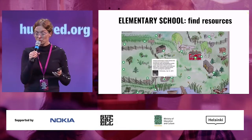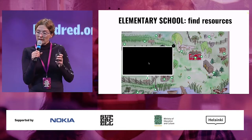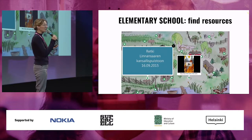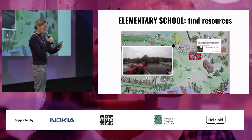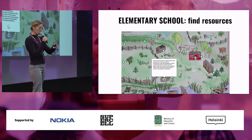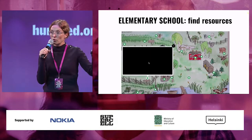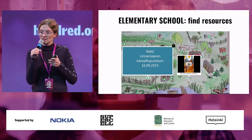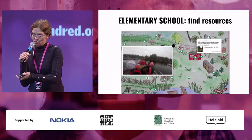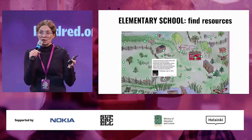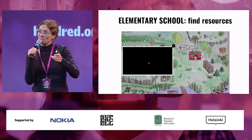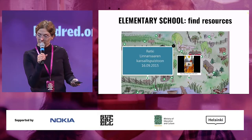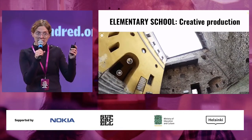Here is another example from an elementary school — this is second graders. In second grade, what children can start practicing is finding and understanding different kinds of resources. In this case, one of the children has drawn a really beautiful map of their own neighborhood, and then the class was engaged in finding different kinds of resources. They had already taken videos of their field trips and there are some photo stories that they have taken. Then with the teacher they collected them and put them on a map.